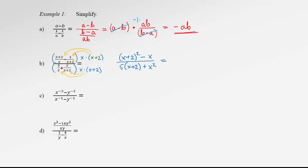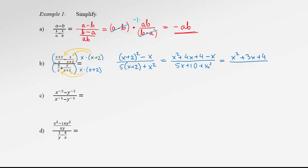Let's simplify a bit more. We need to expand this binomial squared, distribute the 5 in the denominator, and see if the whole thing can be reduced further. In the numerator: x squared plus 4x plus 4, then minus x. In the denominator: 5x plus 10, plus x squared. Rewriting in decreasing order of exponents: numerator is x squared plus 3x plus 4; denominator is x squared plus 5x plus 10.